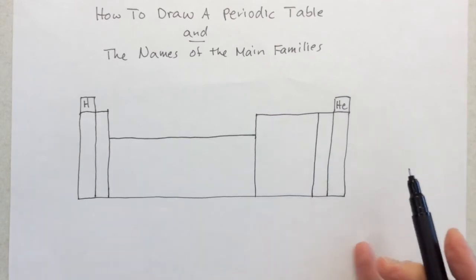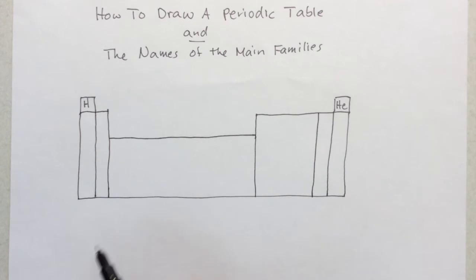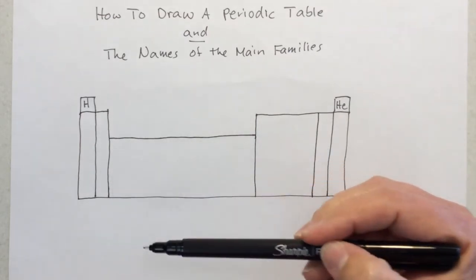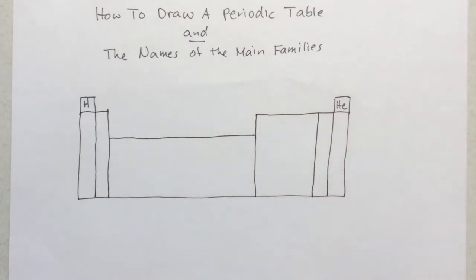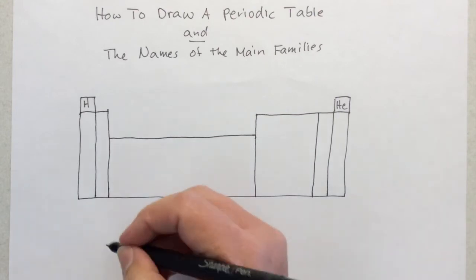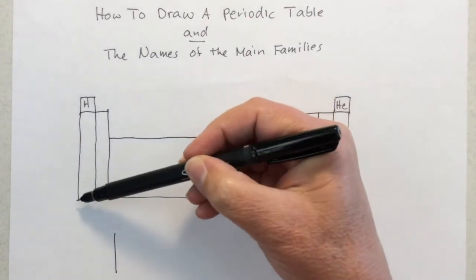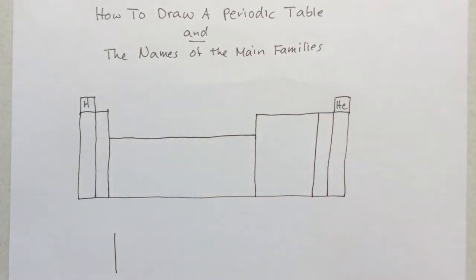Before we go any further, there's one more section we need to draw down here, which is sort of a taken apart section. What they did was they took part of the real periodic table out and put it down below. You'll get more of that later. But if you take a look at your tall skinny box, however wide that is, make a line that's about the same distance.